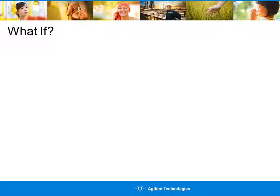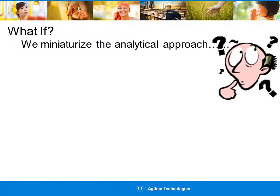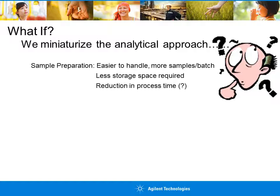As with all scientific methods, we are always striving to improve or optimize. So, what if we miniaturize the analytical approach? What might miniaturizing the QuEChERS sample preparation method offer researchers? It's easier to handle — weighing less sample means centrifuge tubes can be smaller. You could process more samples at once. Less storage is required. Reduction in process time is not necessarily applicable, since the sample still requires the same number of steps. Reduced salt and sorbent cost because we're processing less sample per extraction.